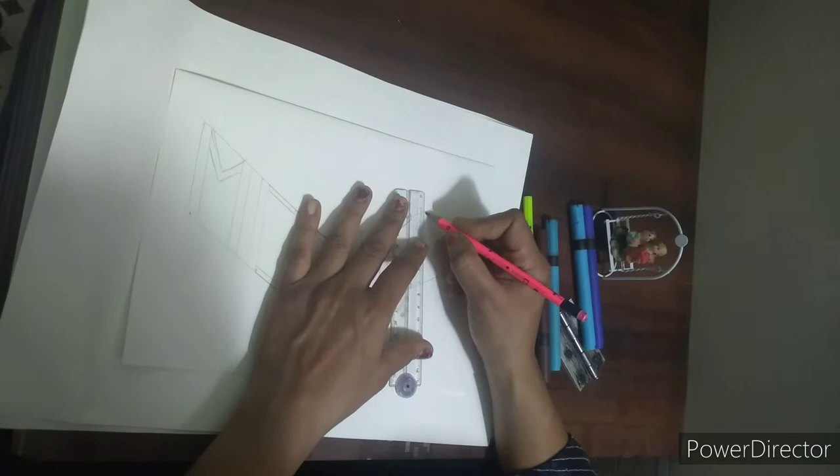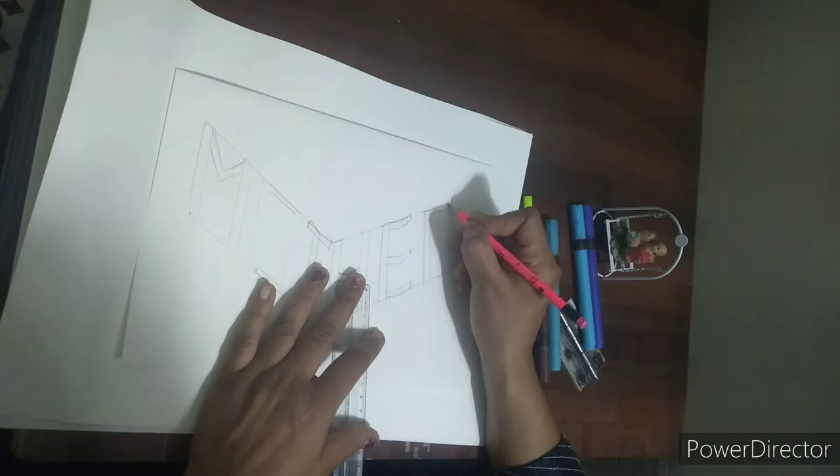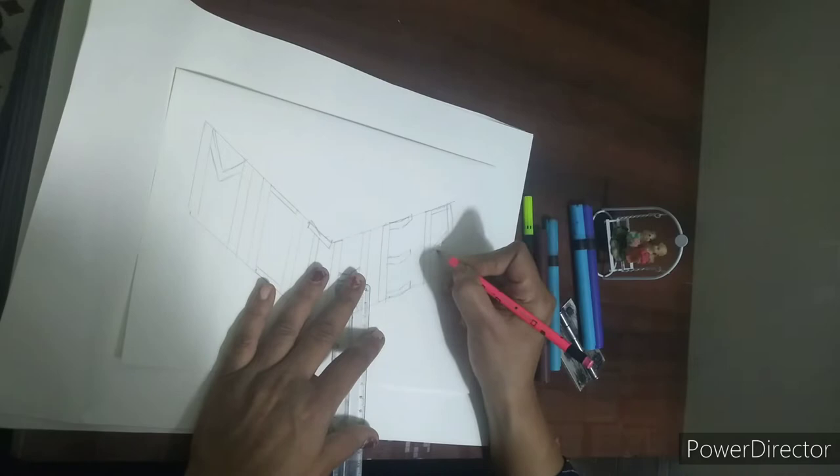You can draw in between. Straight line and straight line, and again straight line. Now I will bend this in the parting line.